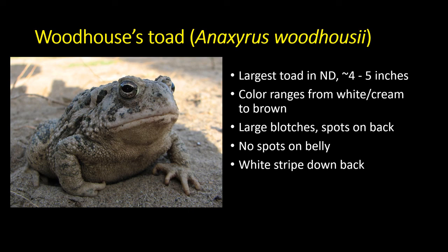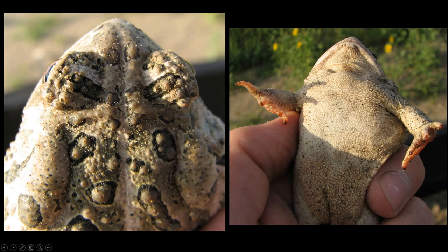On to the Woodhouse's toad, Anaxyrus woodhousii — the largest toad in North Dakota, getting almost five to six inches long. They're big, adorable toads found mostly in the central part of the state. Background color ranges from cream to darker brown with large blotches on the back — not as large as the great plains toad, but larger than American or Canadian toads. They have warts within those spots, but they tend to be dark warts, not red or orange. No spots on the belly, and they almost always have a nice white stripe down their back — more consistent and distinctive than in the other toads.